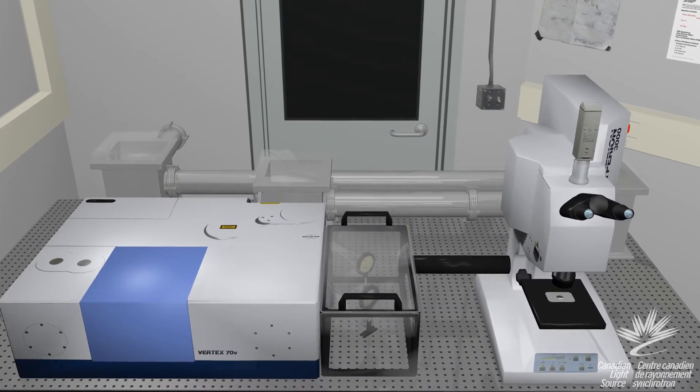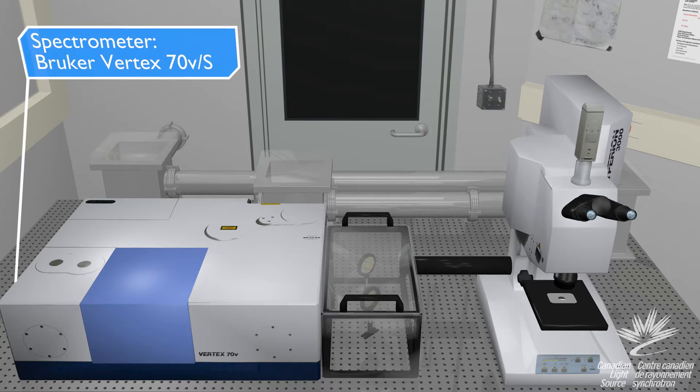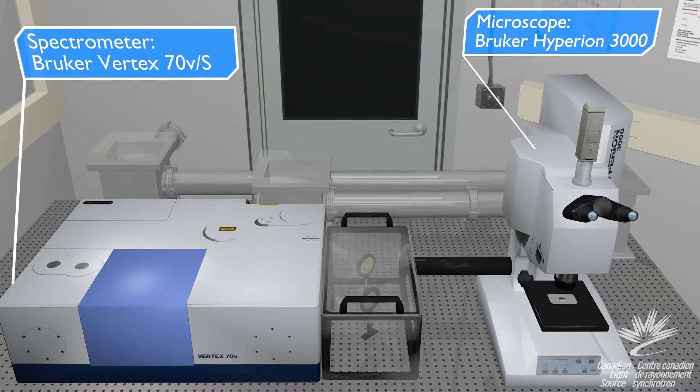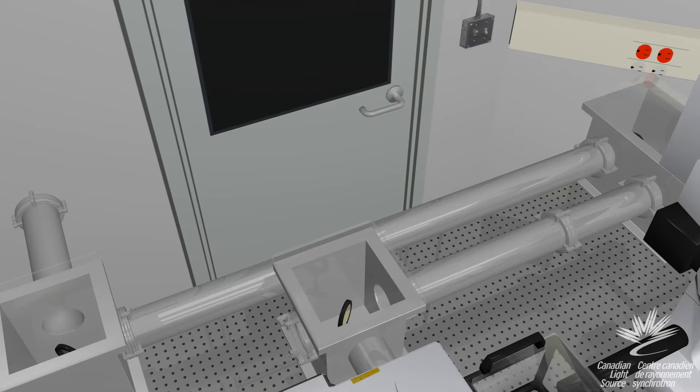The mid-infrared beamline consists of the Bruker Vertex 70V spectrometer connected to a Hyperion 3000 FTIR microscope. This beamline uses infrared synchrotron radiation, which is delivered to the hatch through a series of mirrors inside an evacuated pipe.